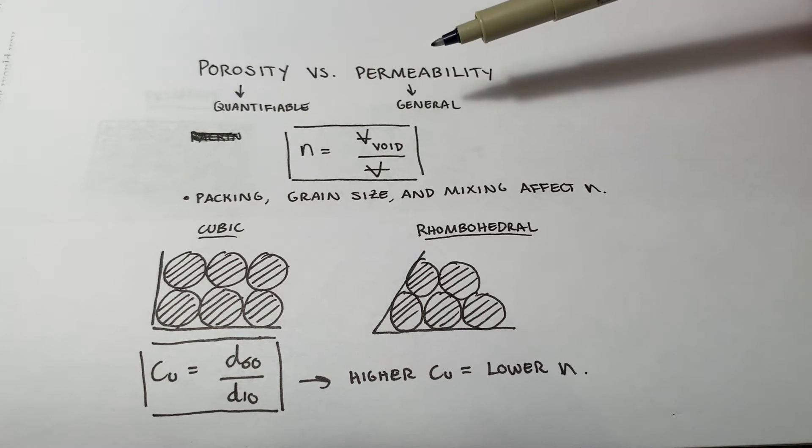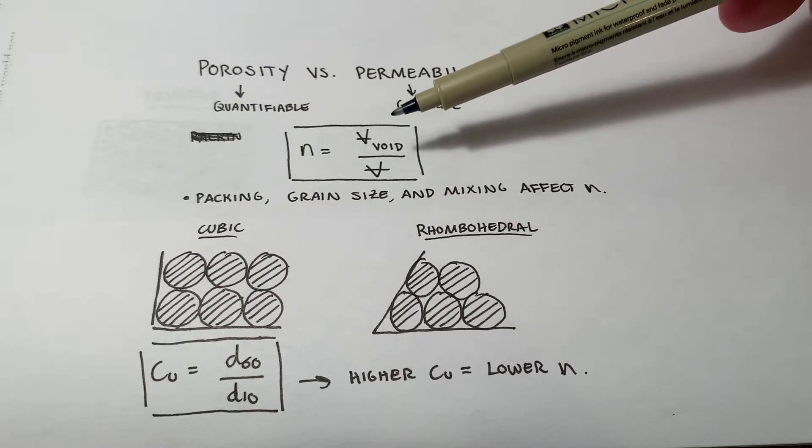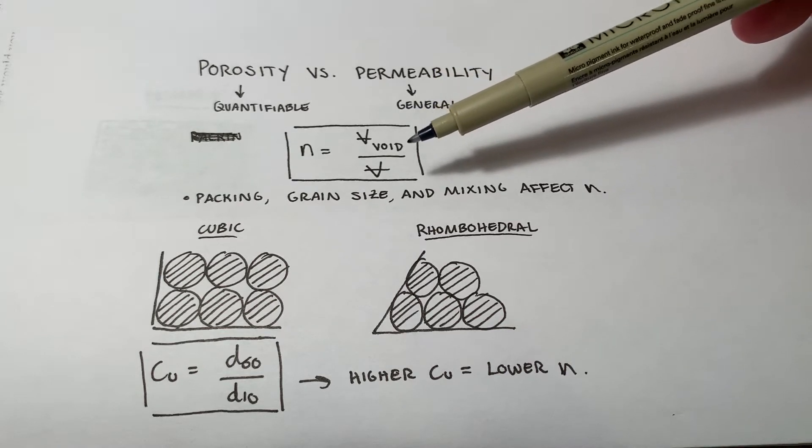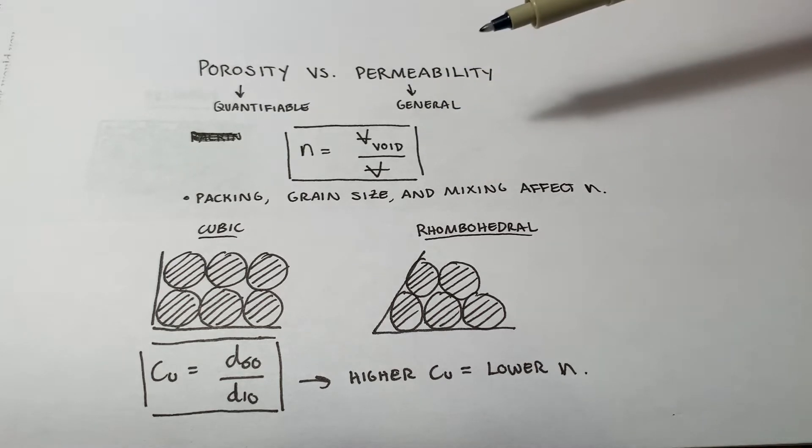Now, porosity, on the other hand, is something specific. And we have an equation to describe it. N, that's our symbol for porosity, is equal to the volume of the void space divided by the total volume of the material. So, you can think of porosity as a specific percentage. It's the amount of void space per unit of volume of your rock or soil or whatever material you're working with.